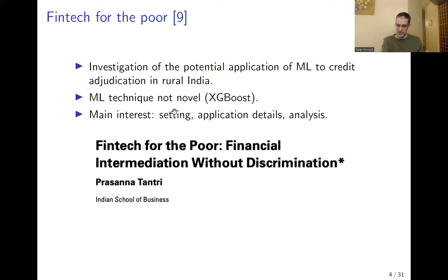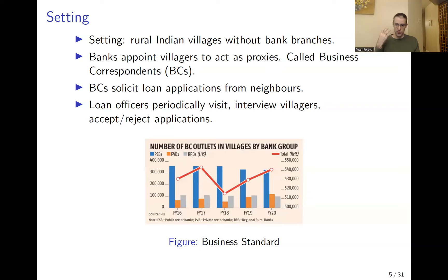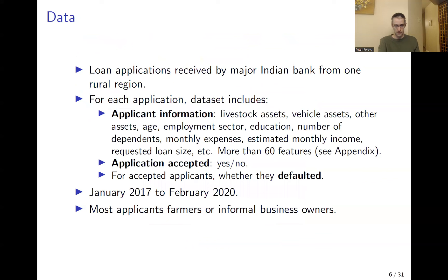One of the main interests of this paper is its setting: rural Indian villages that lack bank branches. In these villages, the standard practice is that Indian banks appoint villagers to act as proxies called business correspondents, or BCs. It's part of the BC's job to solicit loan applications from other villagers. Then periodically, a loan officer visits the village, collects the loan applications from the BC, interviews the applicant villagers, and decides which applications to accept and reject — in other words, the loan officers adjudicate the loans.